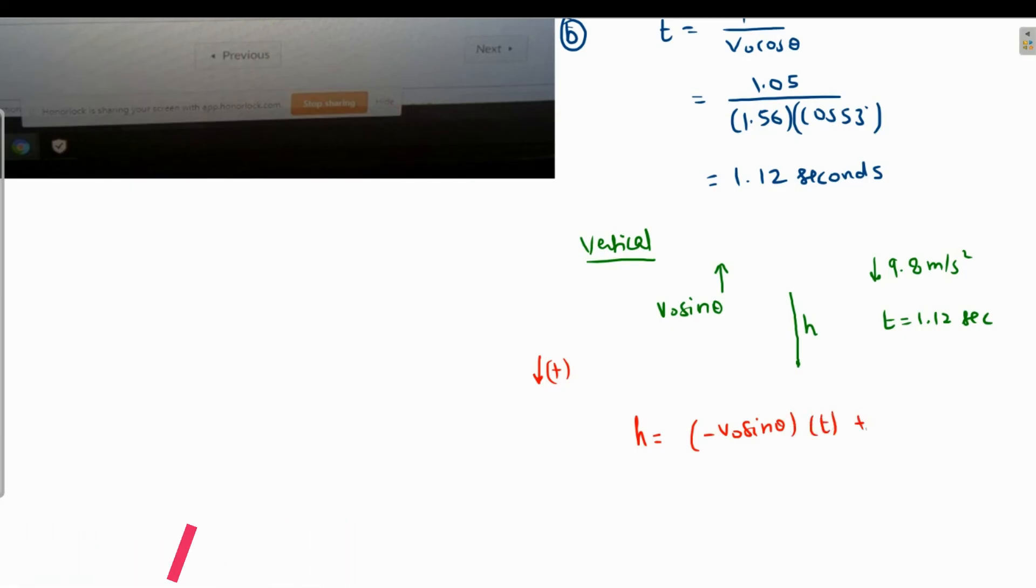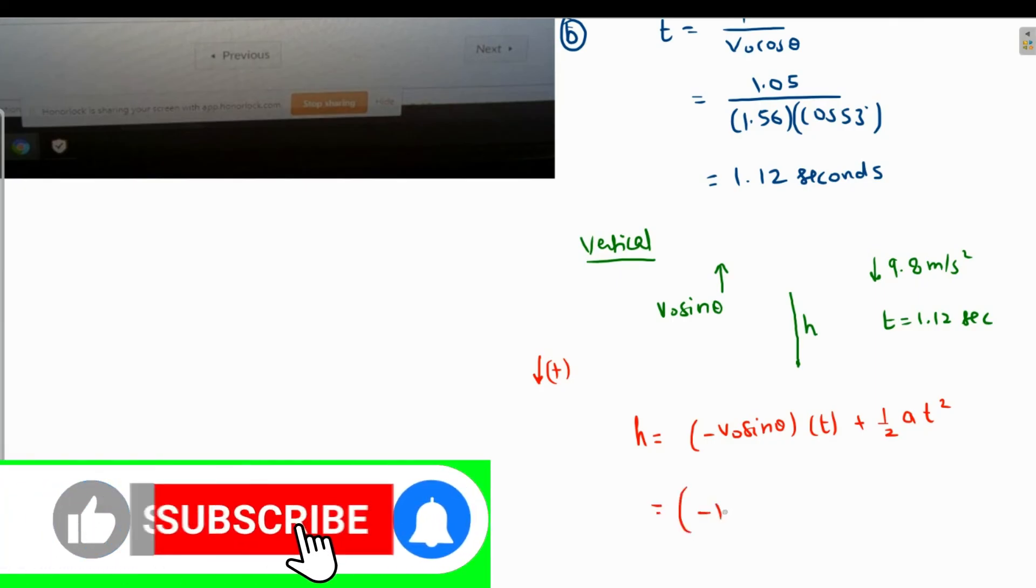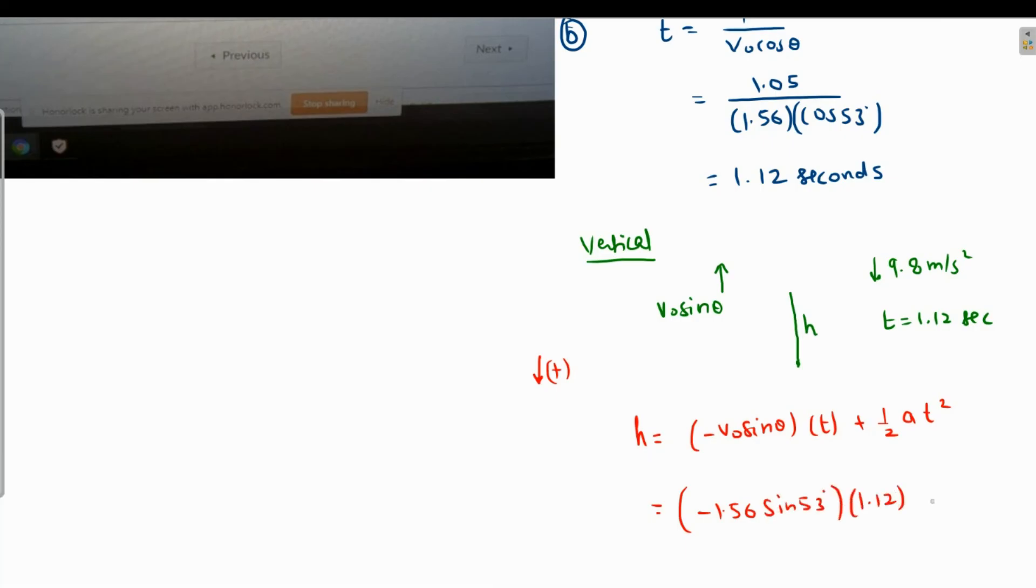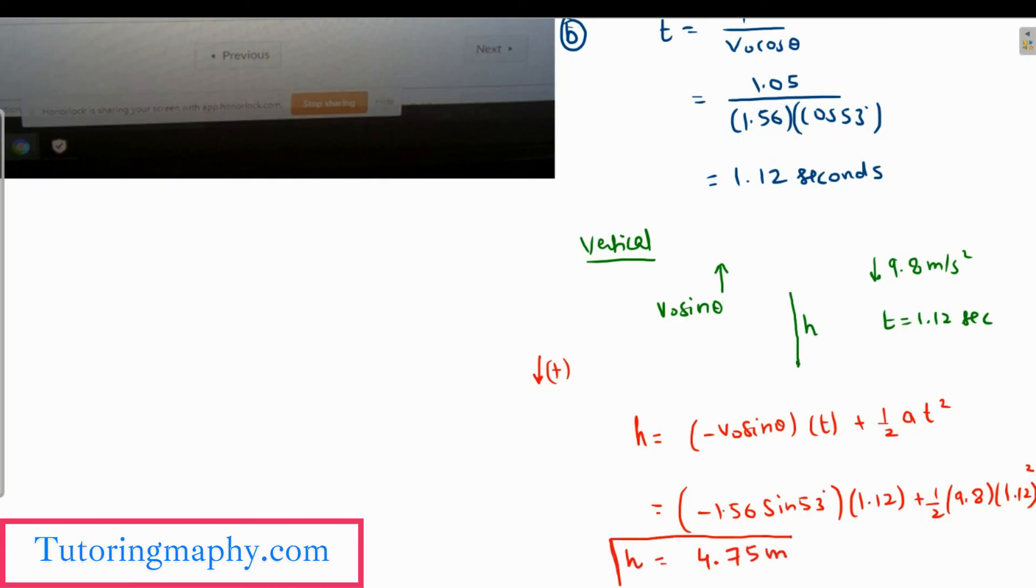Let's take downward direction as positive, so h equals minus v naught, which is 1.56, sine of 53 degrees times time 1.12, plus half times acceleration 9.8 times 1.12 squared. Let me grab my calculator: 9.8 times 1.12 squared over 2 minus 1.12 times 1.56 times sine of 53 degrees. This value is coming as 4.75 meters. That is the value of the height of the cliff.